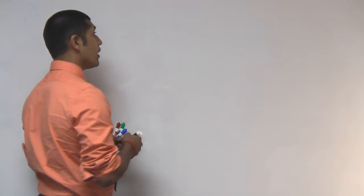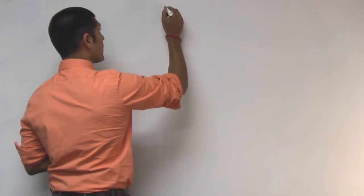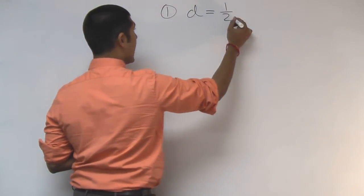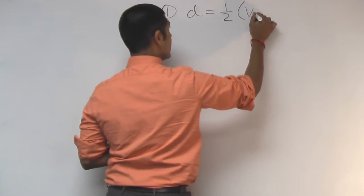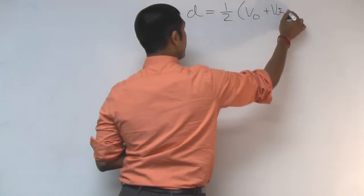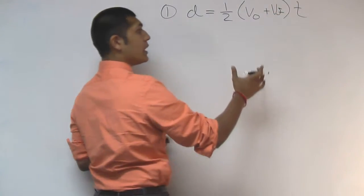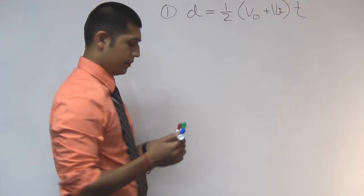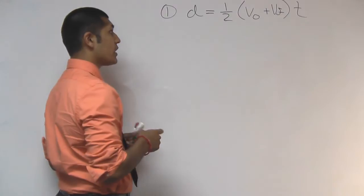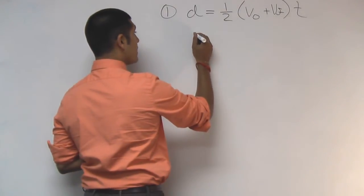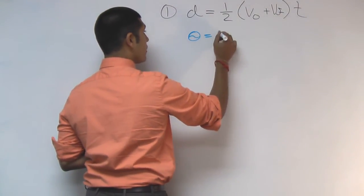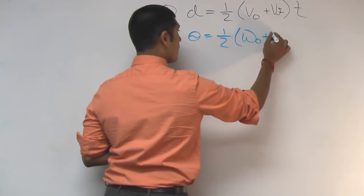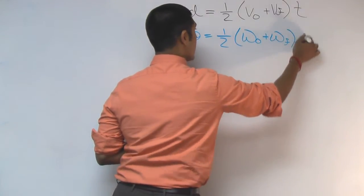Now, from the previous video, you've seen the linear kinematics equations. Distance is equal to 1 half velocity initial plus velocity final times time. This was that average velocity times time equals displacement. In the rotational world, this equation can be written as theta is equal to 1 half times omega initial plus omega final times time.